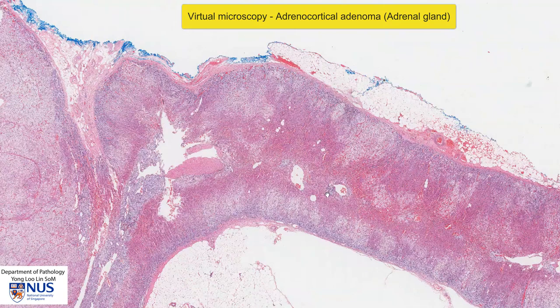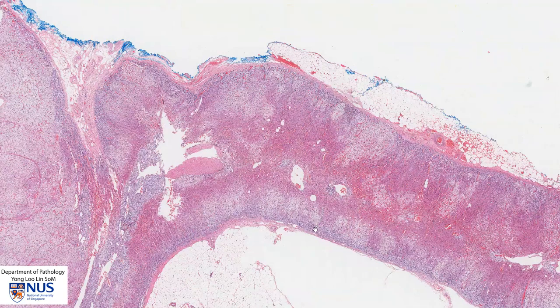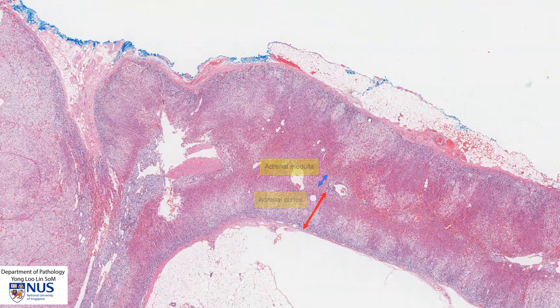Zooming in, this is the region of the adrenal cortex, which has roughly three zones. This bluish area here is the adrenal medulla, and this is back to the cortex on the opposite side.